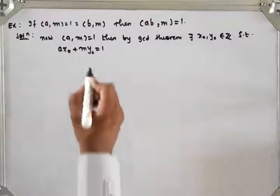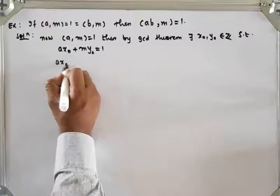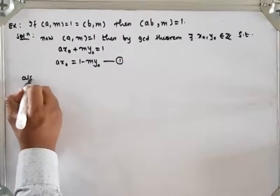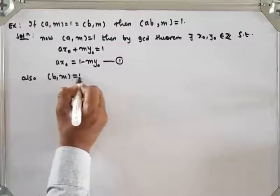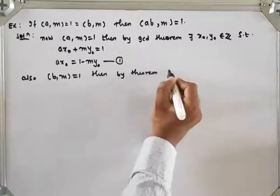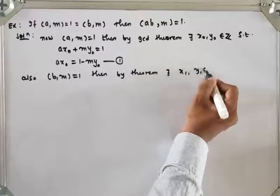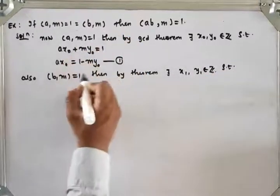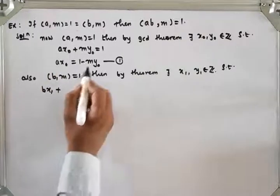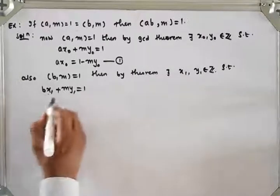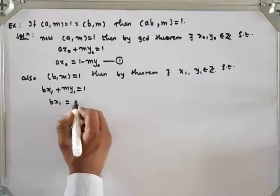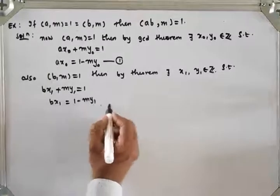So we have to prove GCD of A times B and M equals 1. I will write this equation as AX0 equals 1 minus MY0 — this is equation number 1. Also, since GCD of B and M equals 1, then again by GCD theorem there exist integers X1, Y1 belonging to set of integers such that BX1 plus MY1 equals 1. So BX1 equals 1 minus MY1 — this is equation 2.